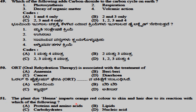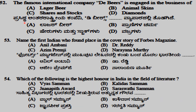The plant henna imparts an orange-red color to skin and hair due to its reaction with proteins and amino acids. The famous international company De Beers is engaged in the business of diamonds. The first Indian to find a place in the cover story of Forbes magazine was Azim Premji.